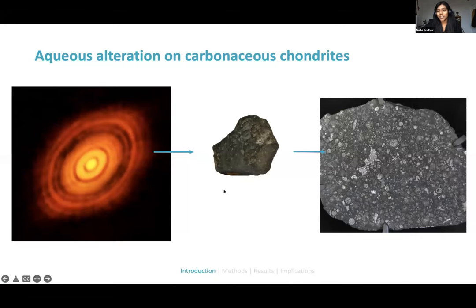Chondrites are these really primitive, undifferentiated meteorites that accrete really early on in the history of our solar system. They serve as a good record of the composition of the dust and gas in the early protoplanetary disk.